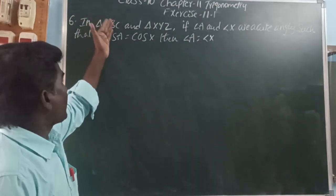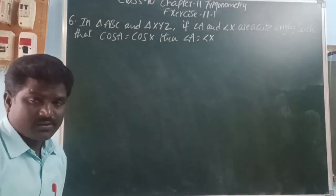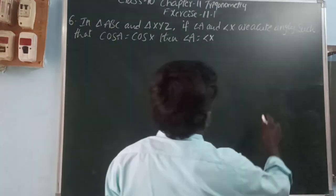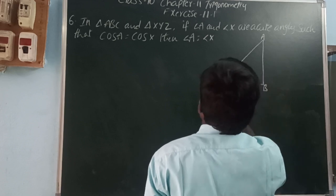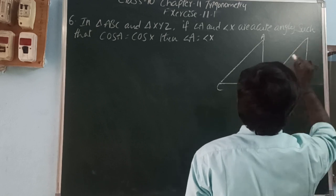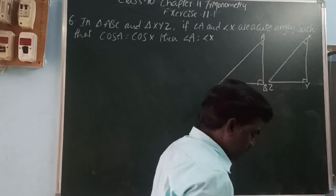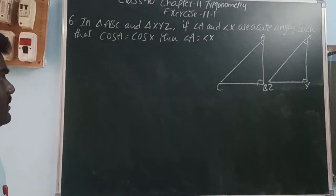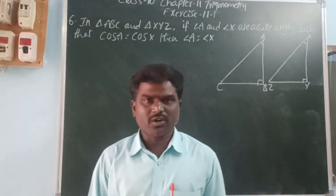Now Question 6: In triangle ABC and triangle XYZ, if angle A and angle X are acute angles such that cos A equals cos X, then prove that angle A equals angle X. So cos A means the cos ratio at angle A, and cos X means the cos ratio at angle X.